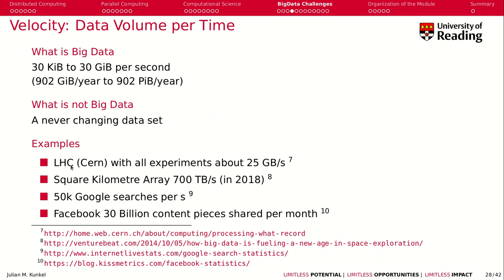The Large Hadron Collider at CERN generates about 25 gigabytes per second across all experiments. The Square Kilometre Array, planned in 2018, was set to create about 700 terabytes per second. We also have about 50,000 Google searches per second, and of course a lot of Facebook activity.